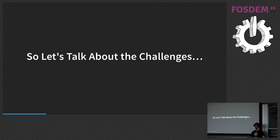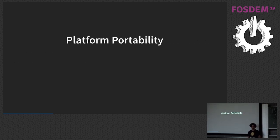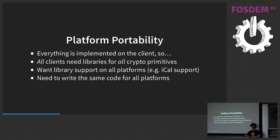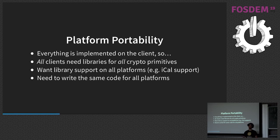The first thing to keep in mind is platform portability. In end-to-end encryption, the server is unaware of anything, so everything has to be implemented on every client. All clients need encryption libraries. For example, if you want elliptic curve support, you need to make sure every client has support for that — you don't want to implement your own cryptography, it's hard and could lead to insecurity. Also, if you use a hardware token like a YubiKey, or if your phone has a secure enclave, you need to know in advance that those are actually supported.